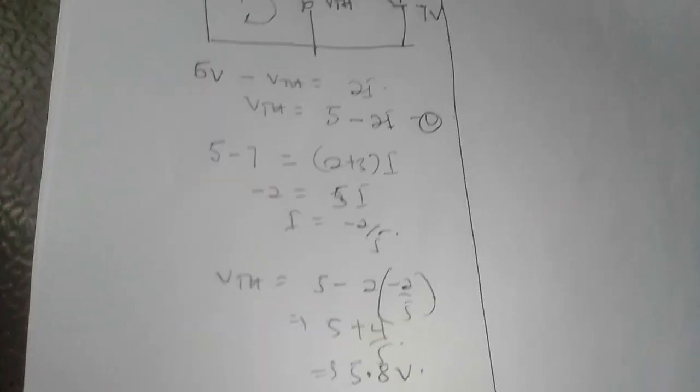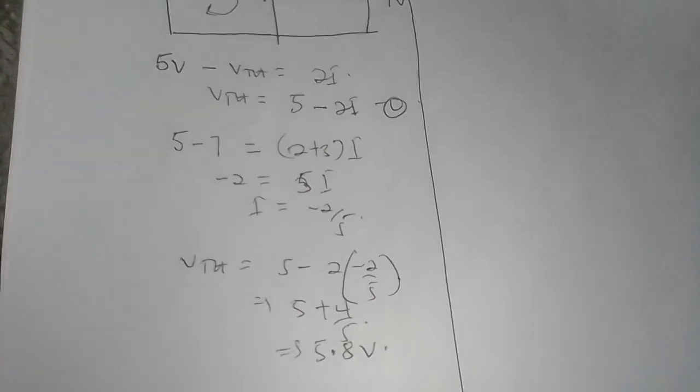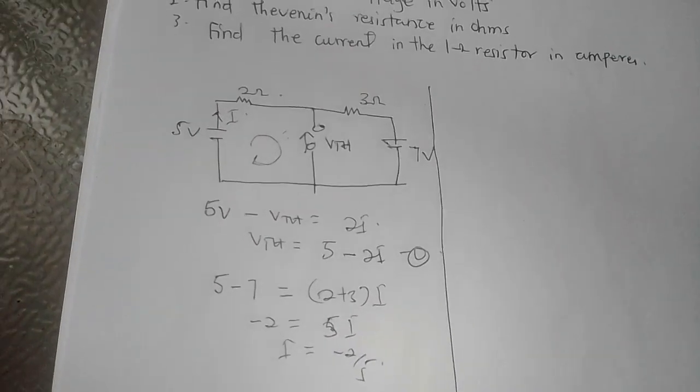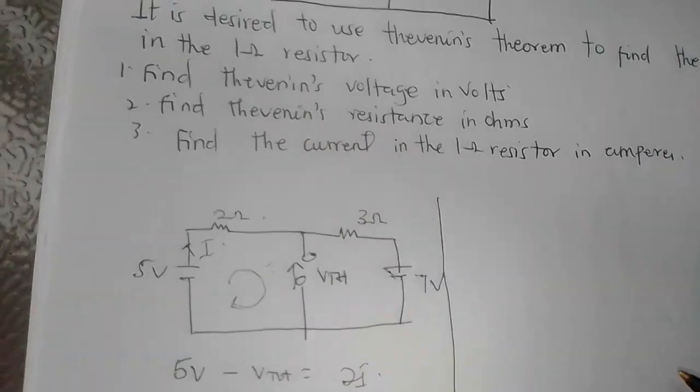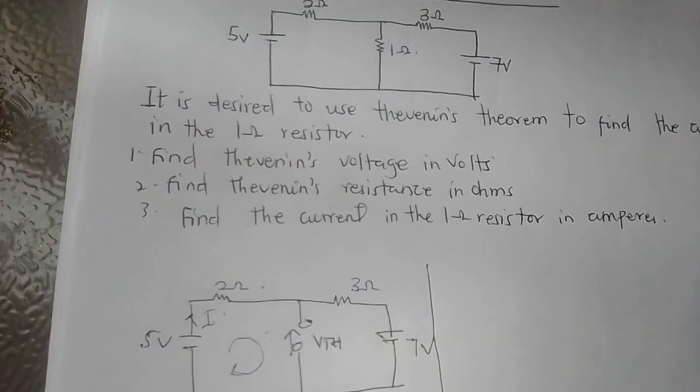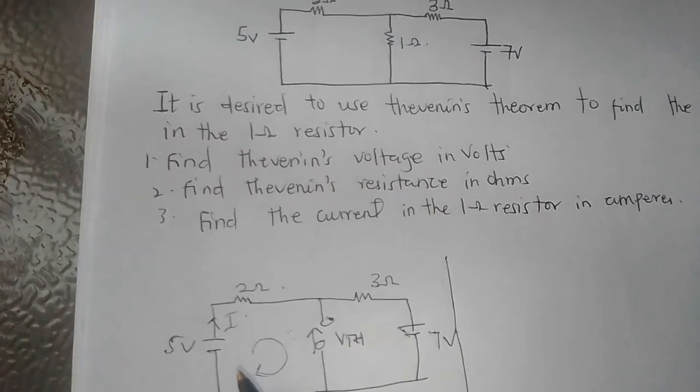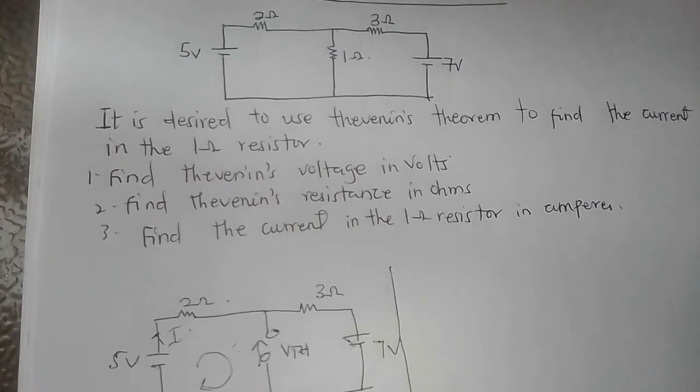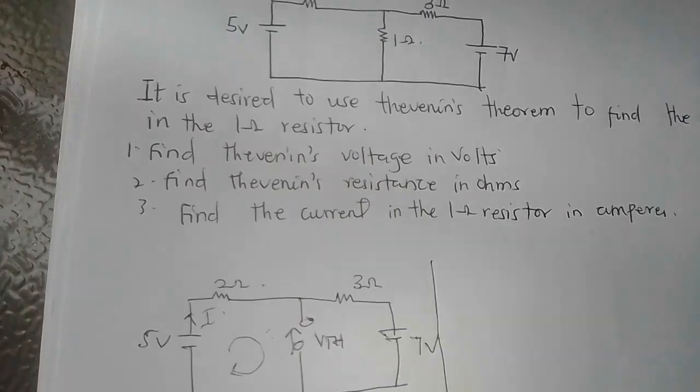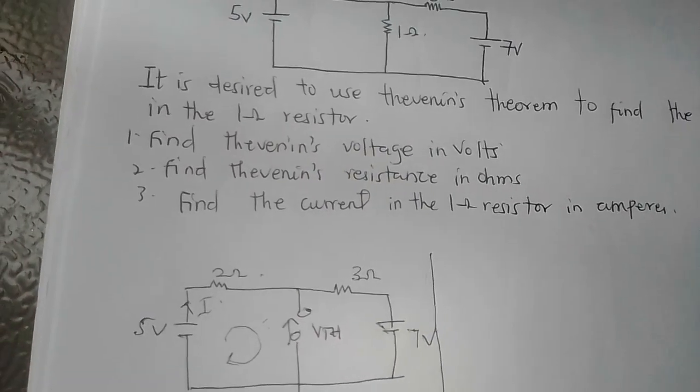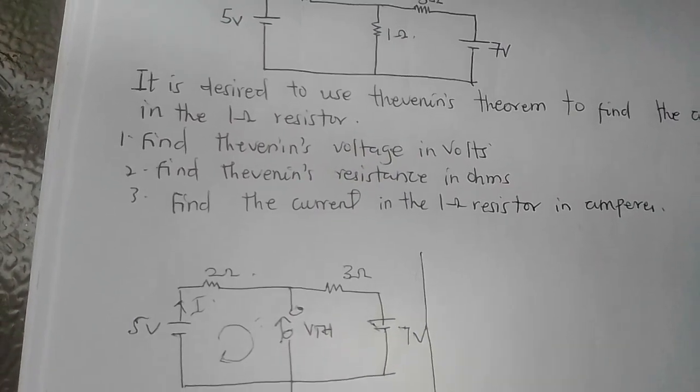Let's quickly move to our RTH. To find the RTH, the principle is saying that you are supposed to remove every source. Here we have a voltage source. To remove a voltage source, you just short-circuit that part. If it happened to be a current source, you only open that part.